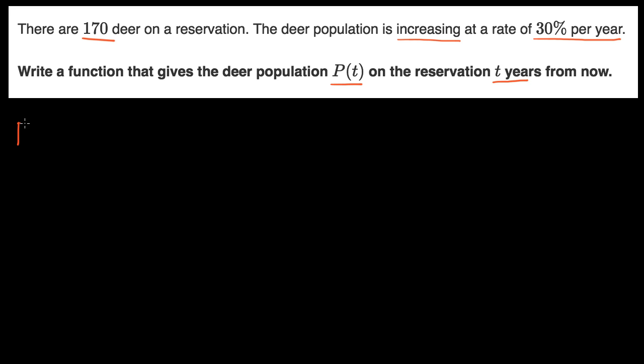But let's think about what P(0) is. P(0), this is going to be the initial population of deer, the population at time zero. Well, we know that. That's going to be the 170 deer that we start on the reservation.